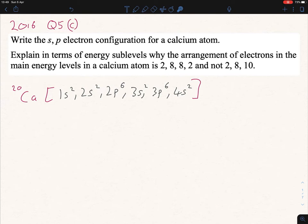The next part asks you to explain in terms of energy sublevels why the arrangement of electrons in the main energy levels of calcium is 2,8,8,2 as opposed to 2,8,10. The reason is the 4s2 sublevel is lower in energy than the 3d sublevel. That's why 4s2 comes before 3d10 because the 4s2 sublevel is lower in energy.